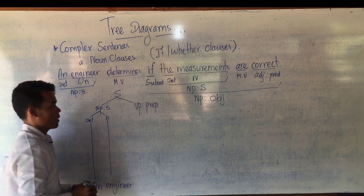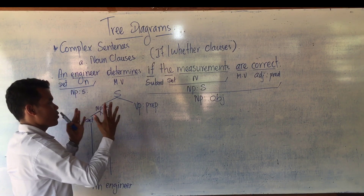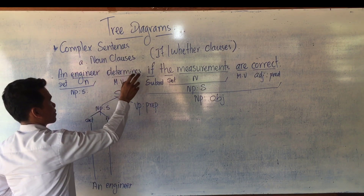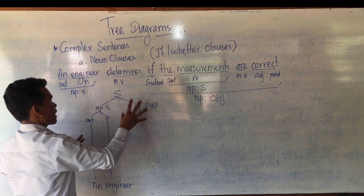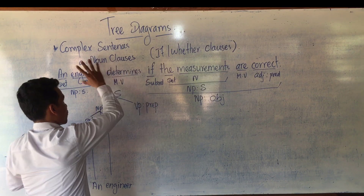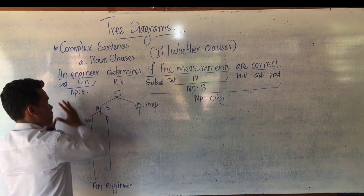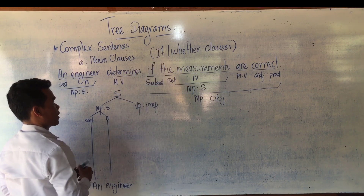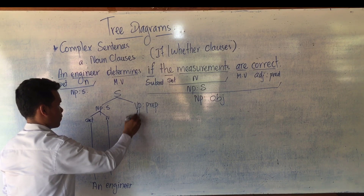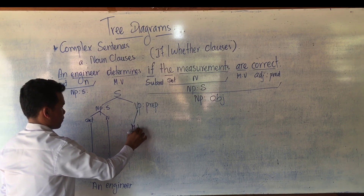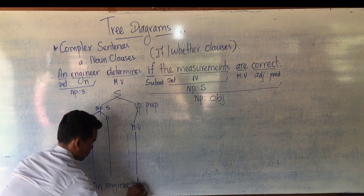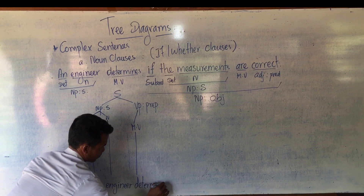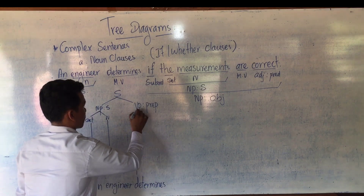Let me explain something: when you see a noun clause or adjective clause in a complex sentence, we draw the diagram starting from the noun phrase subject and the verb predicate. So when you see a noun phrase subject, the rest is the verb predicate. The main verb here is 'determines.'